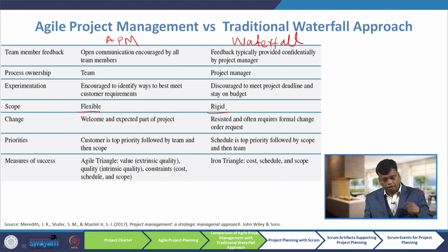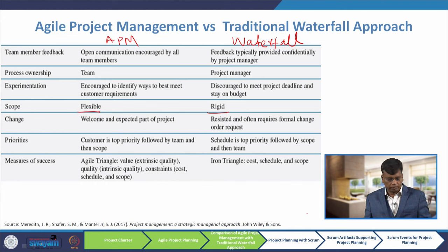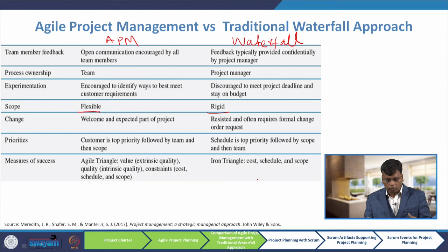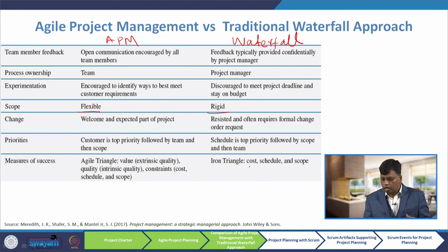With respect to scope: in agile it is flexible, but in waterfall the scope is frozen and rigid. With respect to change: in agile, change is welcomed and expected; in waterfall it is resisted and often requires a formal change order request. For priorities: in agile, the customer is top priority followed by team and then scope; in waterfall, schedule is top priority followed by scope and then team. For measure of success: agile uses the agile triangle — value (extrinsic quality), quality (intrinsic quality), and constraints like cost, schedule, and scope; waterfall uses the iron triangle of cost, schedule, and scope.